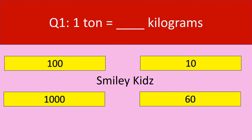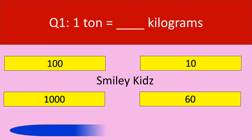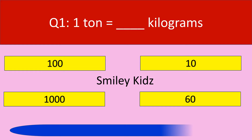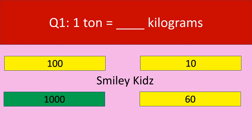Question number 1. 1 tonne is equal to dash kilograms. Your options are 1, 10, 60. Your time starts now. Your time is up. The correct answer is 1000. 1 tonne is equal to 1000 kilograms.